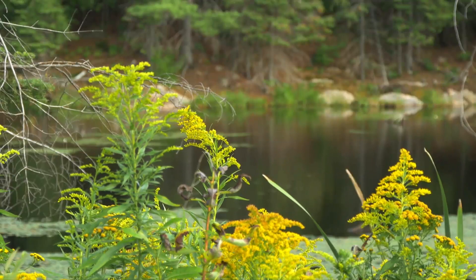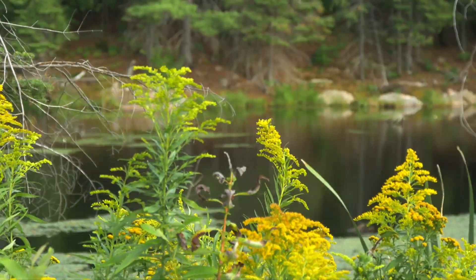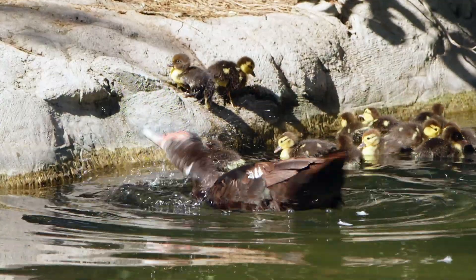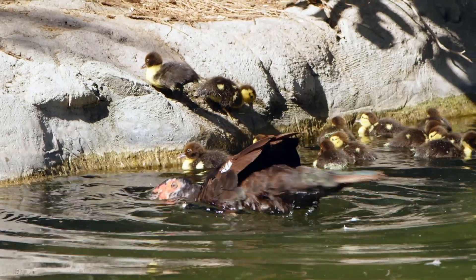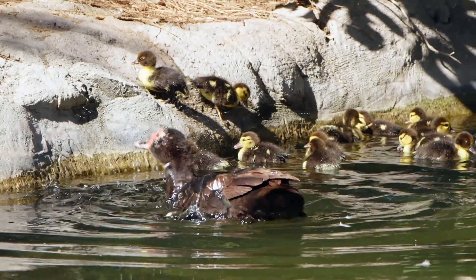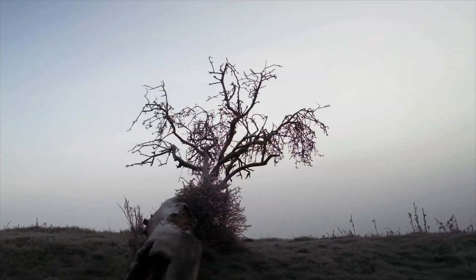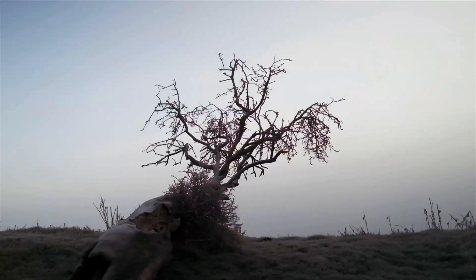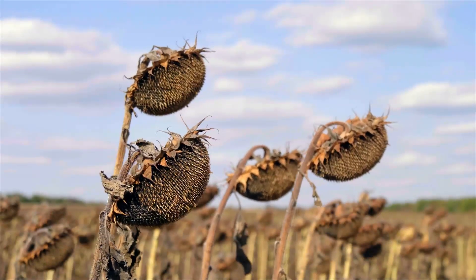The acidity of water is very important to take notice of because when water becomes too acidic it starts to affect the environment, especially aquatic animals and plants that depend on clean water to live. For example, fish cannot survive if water is below 4 or above 10 on the pH scale. In addition, acid rain also damages plants and trees and makes it difficult for plants to consume water due to the high acidity of the water.